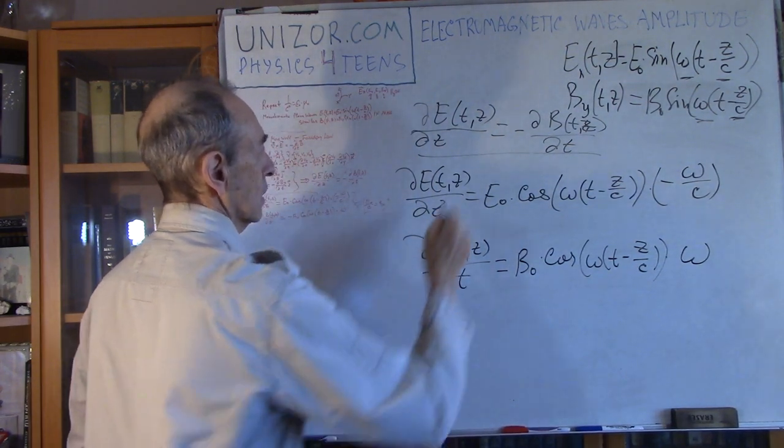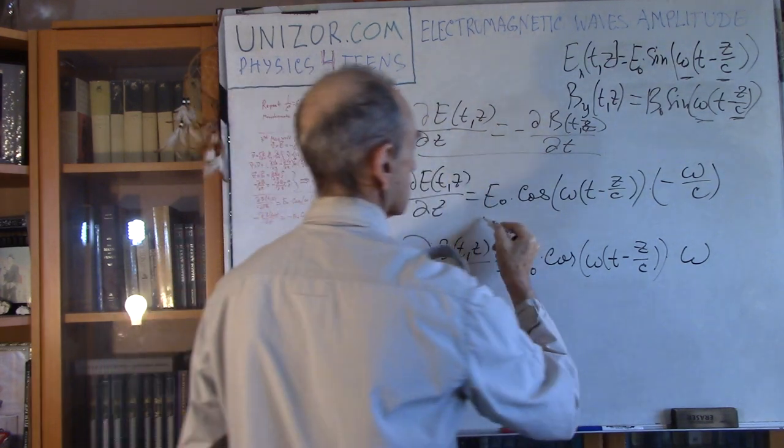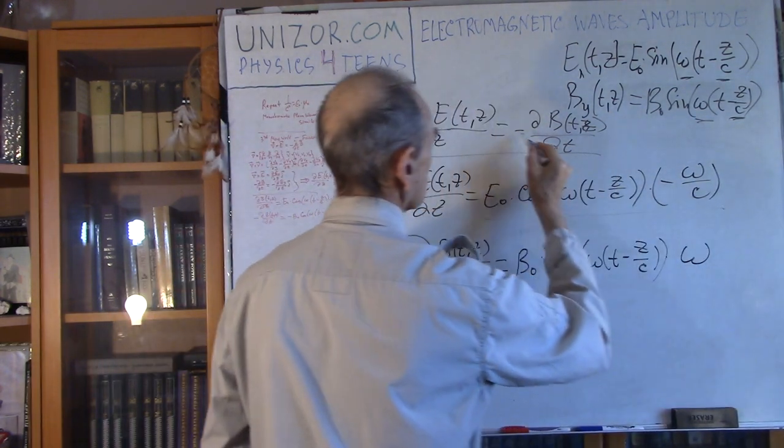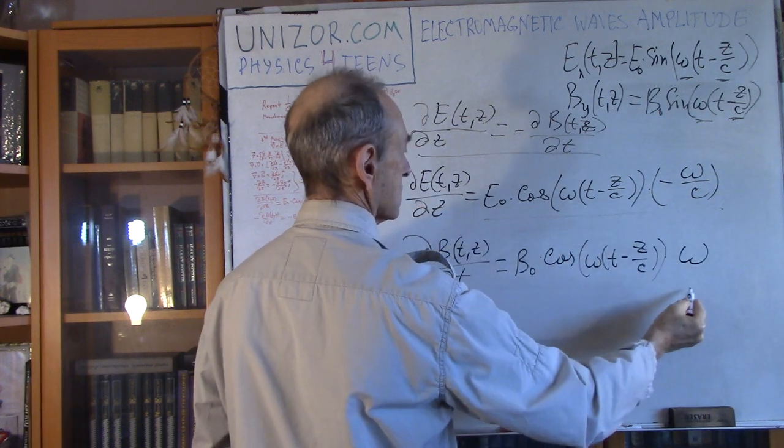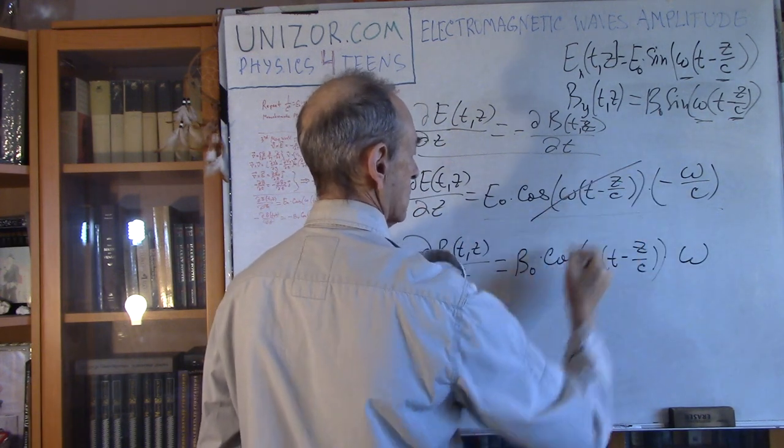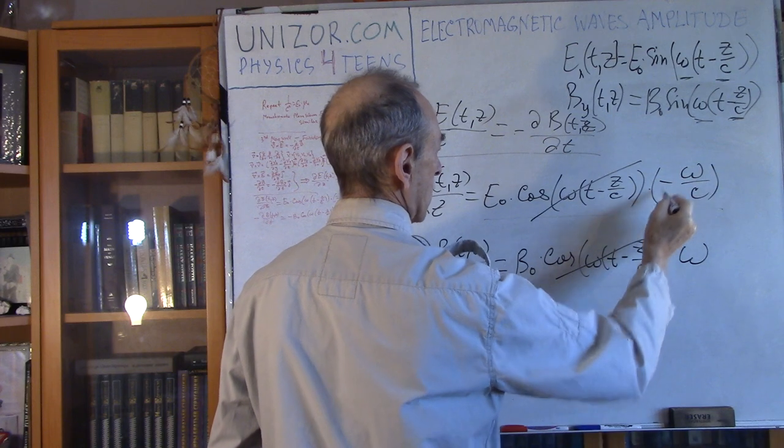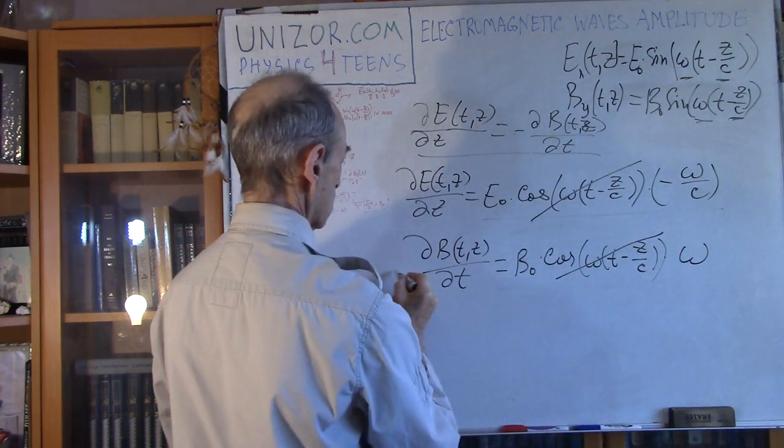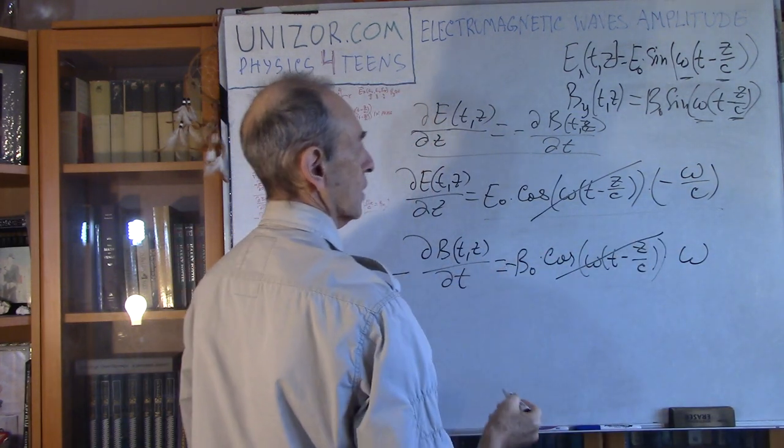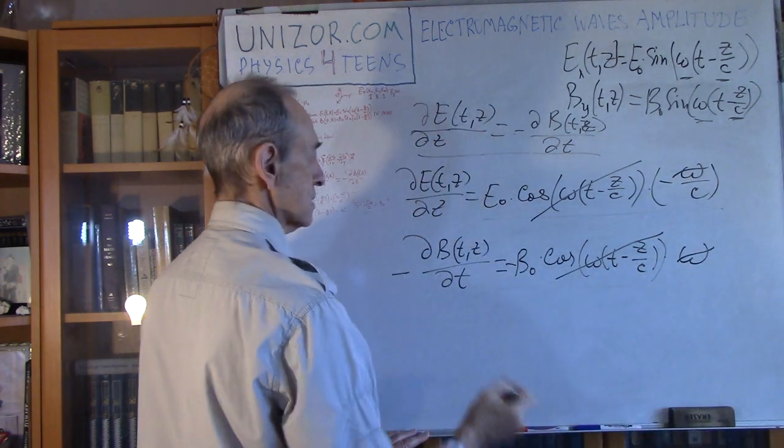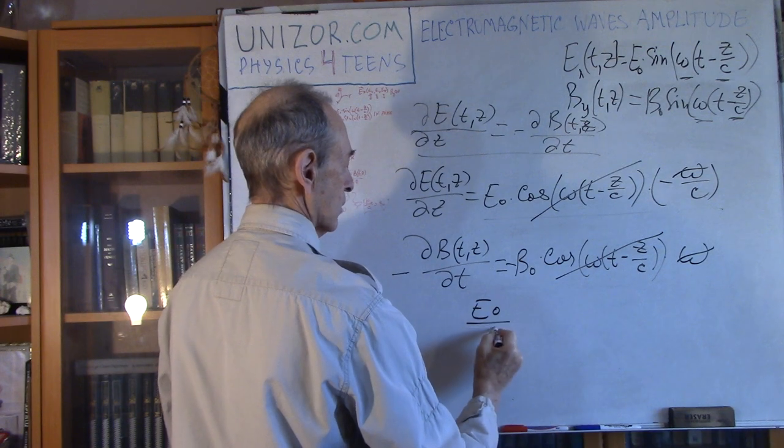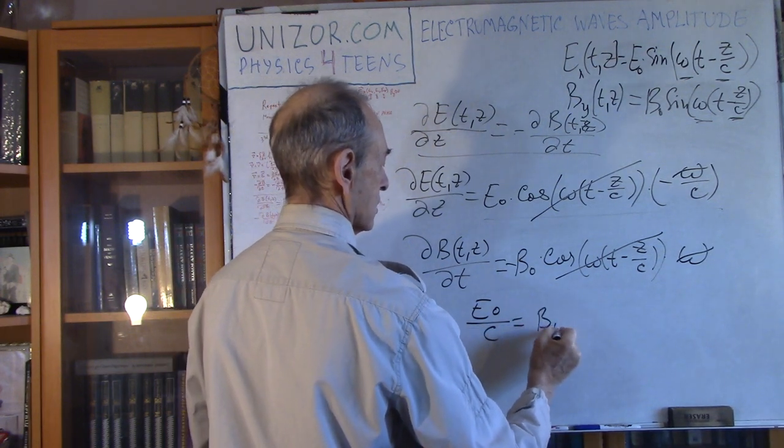Let's compare. This is equal to minus this. The cosine is the same. Minus here and minus there cancel. Omega is the same. So the only thing that remains is E0 divided by c equals B0.